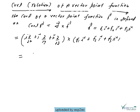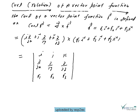We can write curl of f as a 3×3 determinant with first row i, j, k; second row del/del-x, del/del-y, del/del-z; and third row f1, f2, f3. By the property of the determinant, this gives the curl of vector f.